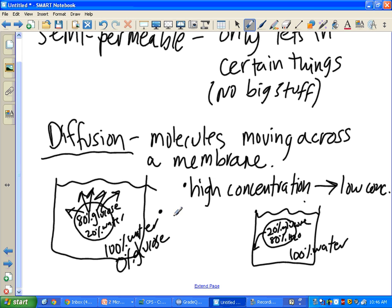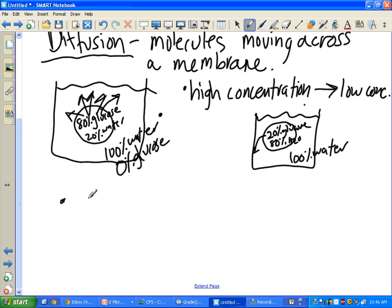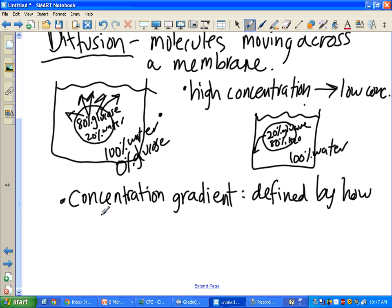So that's what a concentration gradient is. A concentration gradient is basically the difference in concentrations inside the cell and outside the cell. So this concentration gradient is very steep. You have 80 and zero. This concentration gradient is not very steep. You have 20 and zero. How great of a difference there is.